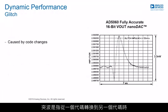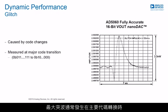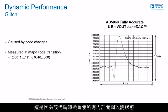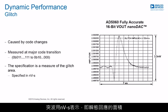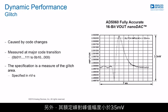Glitch is a transient response observed on the output when transitioning from one code to another. The maximum glitch typically occurs during a major code transition from 01111 to 10000, or vice versa, because this transition causes all internal switches to change state. Characterization data is now gathered on all successive code transitions. Glitch is specified in nanovolt-seconds, which is the area of the transient response. For the AD5060 nano DAC, this is specified as less than 3 nanovolt-seconds, and the peak-to-peak amplitude is specified as less than 3.5 millivolts.